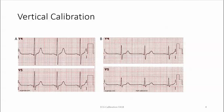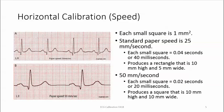The next topic is horizontal calibration, which calibrates for speed. Each small square is 1 millimeter squared. Standard paper speed is 25 millimeters per second, which is the one we'll use. Each small square equals 0.04 seconds or 40 milliseconds, and each large square is 0.2 seconds or 200 milliseconds. This produces a rectangle that is 10 millimeters high and 5 millimeters wide — we'll see a picture of that in a moment.